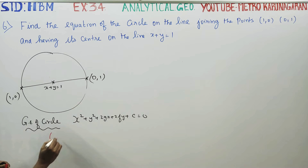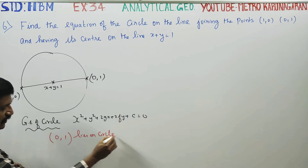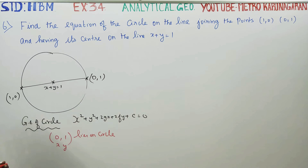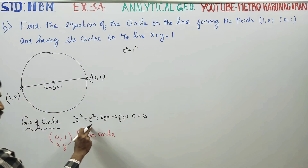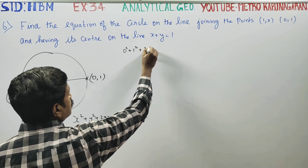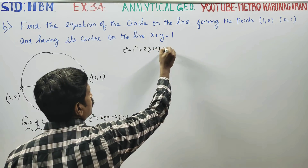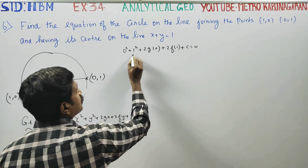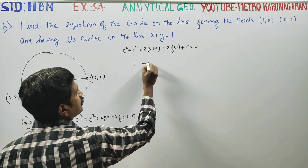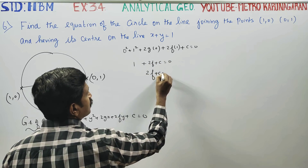Point (0,1) lies on the circle. Substituting x equal to 0 and y equal to 1 into the general equation: 0² plus 1² plus 2g into 0 plus 2f into 1 plus c equal to 0. This simplifies to 1 plus 2f plus c equal to 0, therefore 2f plus c equal to minus 1. This is equation number 1.